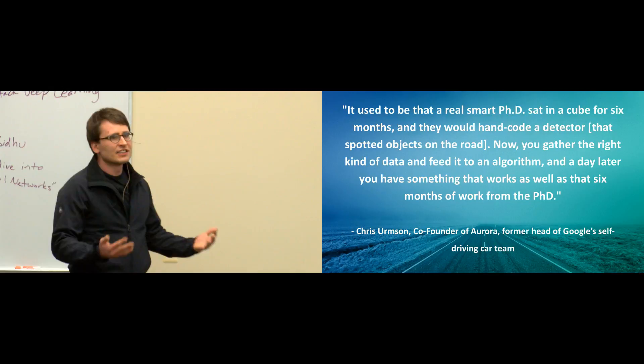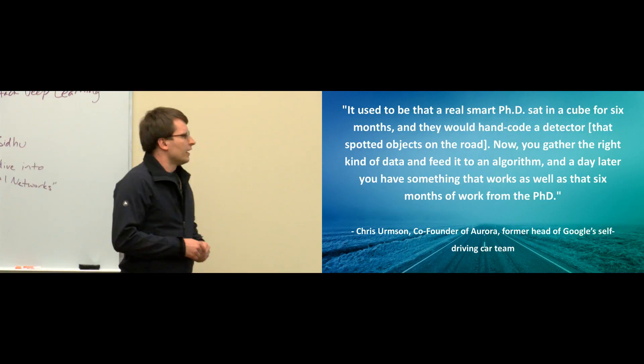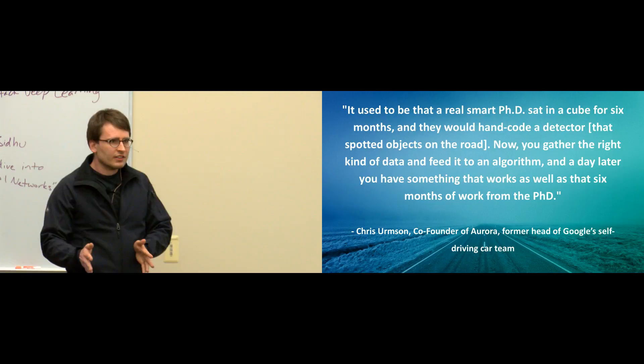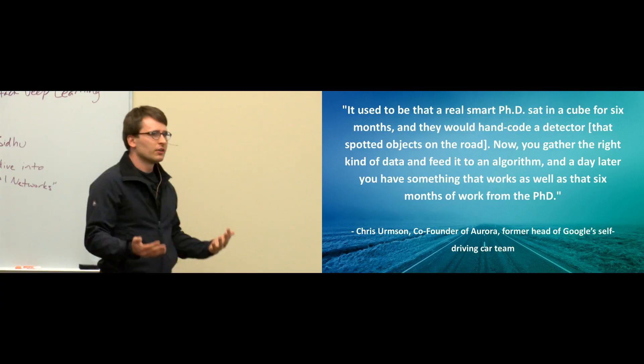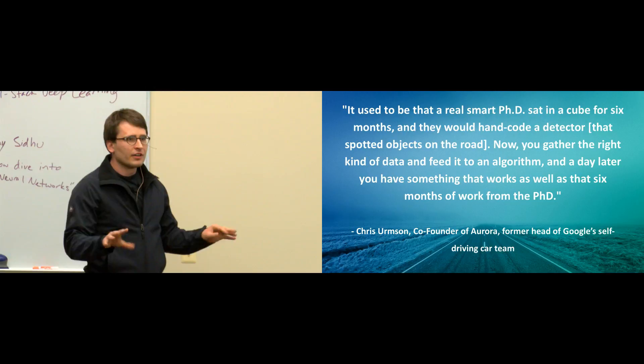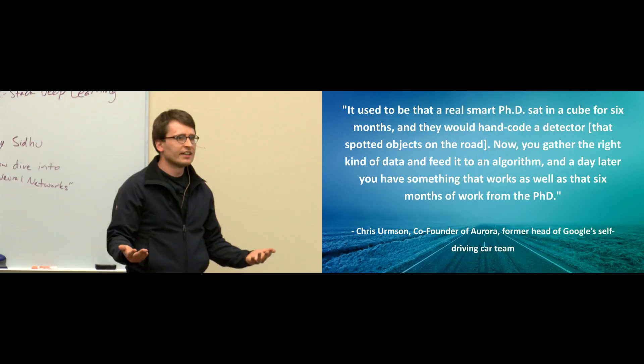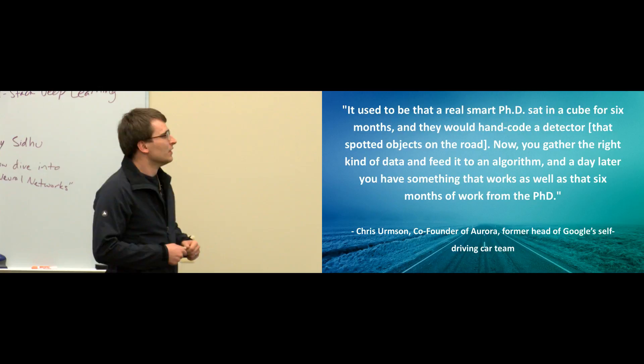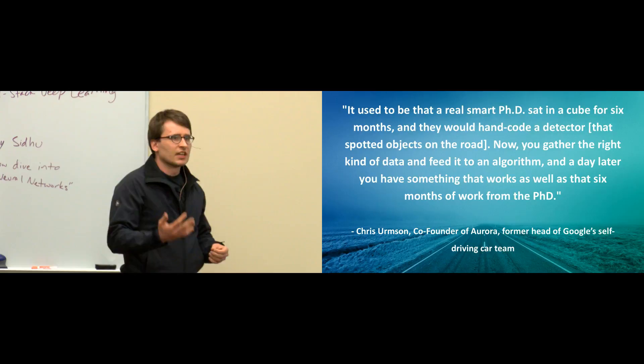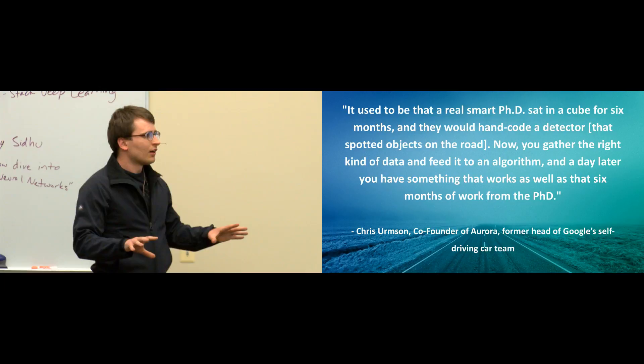Deep learning actually sells itself short here — it's not just as good as hand-coded solutions, it's often way better. And the flexibility is amazing. If you want to add a new category of objects, that's a matter of collecting and annotating data rather than an algorithmic problem. Beyond object detection — segmentation, speech recognition, text analytics — people with core deep neural net expertise can tackle all of these with more modest domain expertise than before.